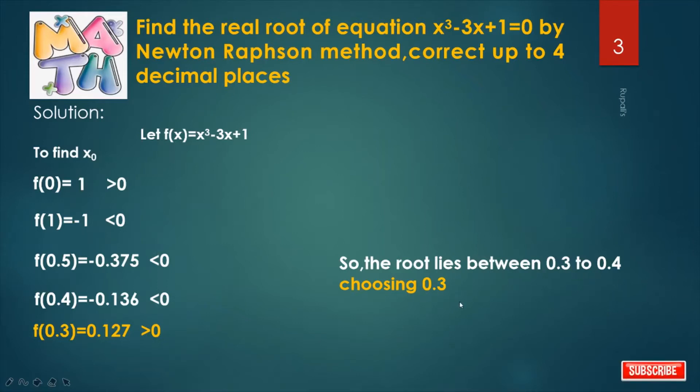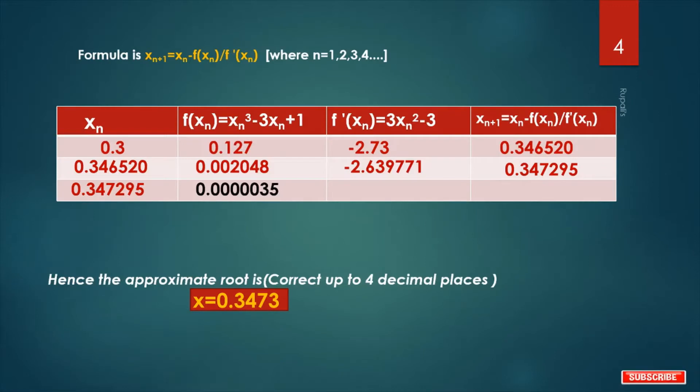By choosing 0.3, we start drawing this table where there are 4 columns: xₙ, f(xₙ), f'(xₙ), and the formula xₙ₊₁ = xₙ - f(xₙ)/f'(xₙ). Now, first we start from 0.3, calculate f(xₙ), calculate f'(xₙ), and then calculate xₙ₊₁.